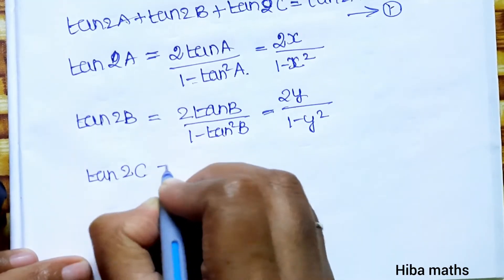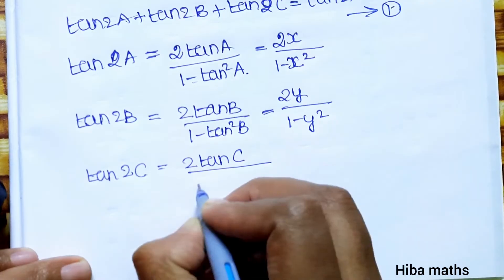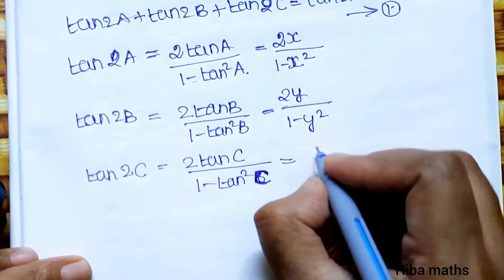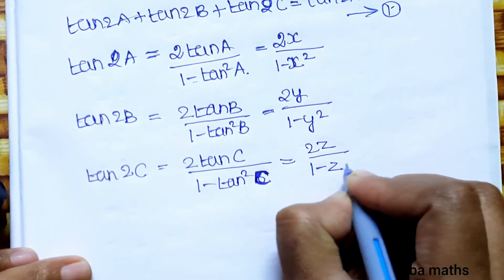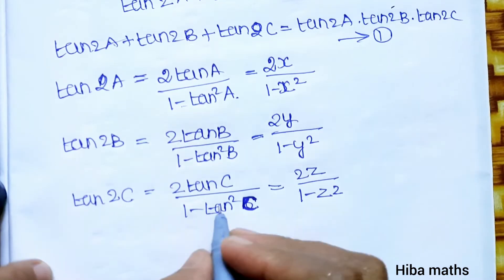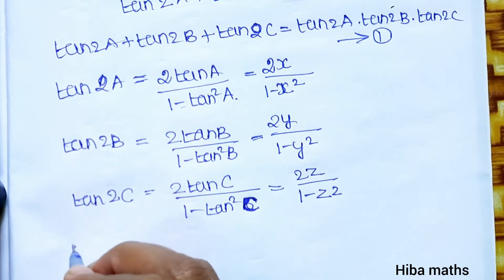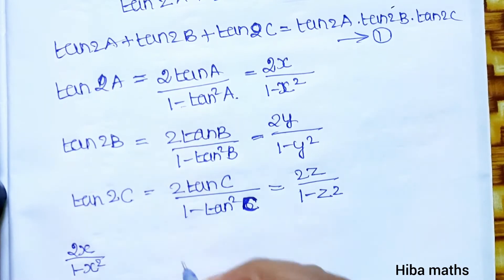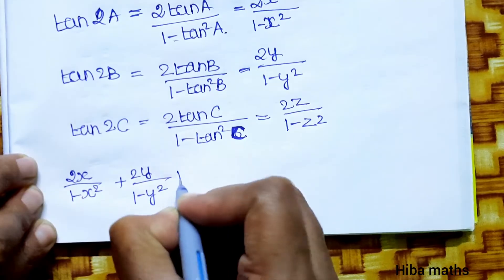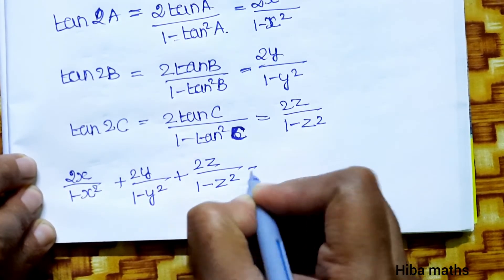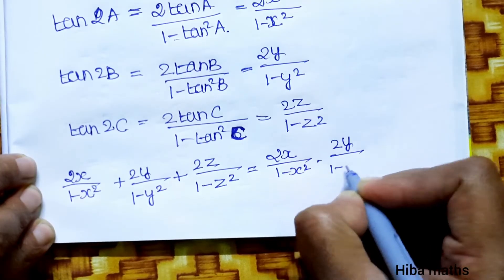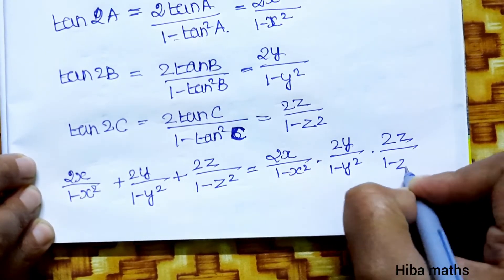And tan 2C equals 2 tan C divided by (1 minus tan squared C), which equals 2z divided by (1 minus z square). Now substituting into equation 1: 2x by (1 minus x square) plus 2y by (1 minus y square) plus 2z by (1 minus z square) equals 2x by (1 minus x square) times 2y by (1 minus y square) times 2z by (1 minus z square). Hence proved.